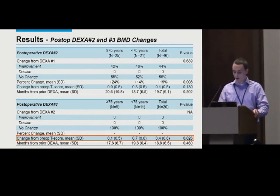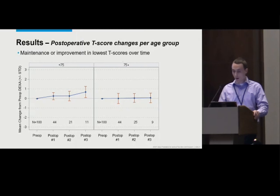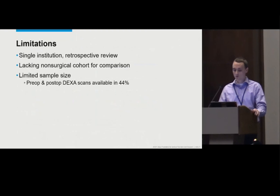The improvement in elderly patients translated to no average change in lowest T-scores, versus an improvement of 0.3 in the younger group, which was significant. By the second and third postoperative DEXA scans, the majority of patients did not experience a change from prior DEXA — 56% at the second scan and 100% by the third scan. Of note, no patients in either group had a decline in bone densities. Of those that did have a change, it was greater in the 75 and older group with a 24% increase compared to 14%. Patients under 75 had a larger improvement in T-scores with an increase of 0.7 compared to 0.1 in the 75 and older group. The first postoperative DEXA scans were done on average about a year and a half after surgery, second scans at almost three years, and third scans at about four years.